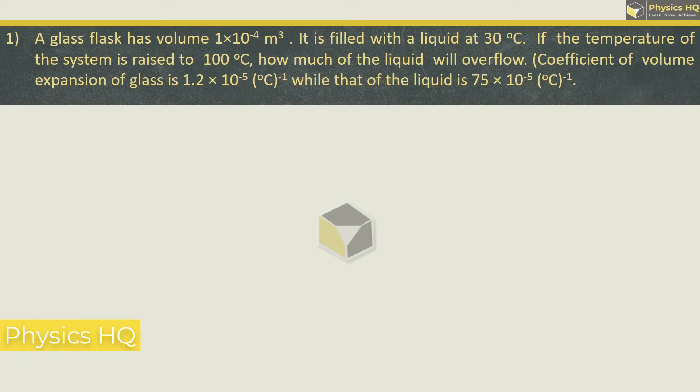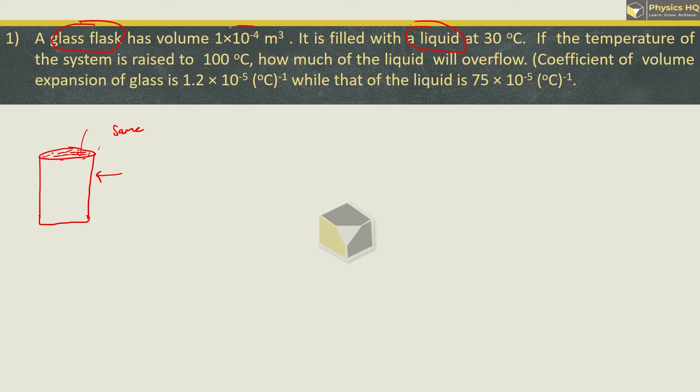A glass flask has volume 10 raised to minus 4 meter cube. It is filled with a liquid at 30 degree Celsius. If the temperature of the system is raised to 100 degree Celsius, how much of the liquid will overflow? Coefficient of volume expansion for glass and liquid is given. The glass flask is filled up with this liquid up to the top. That means the vessel's volume and the liquid volume is the same, which is 10 raised to minus 4 meter cube. And the temperature is raised from 30 degree Celsius to 100 degree Celsius.